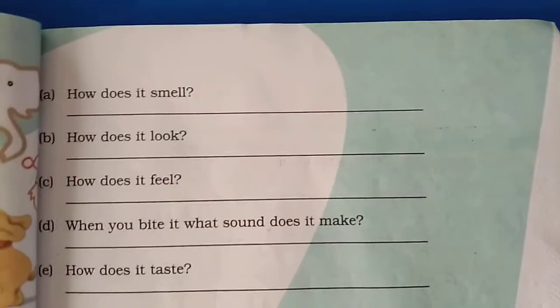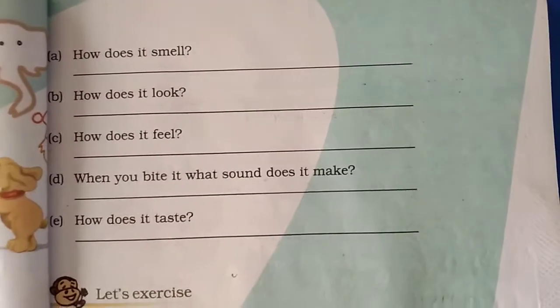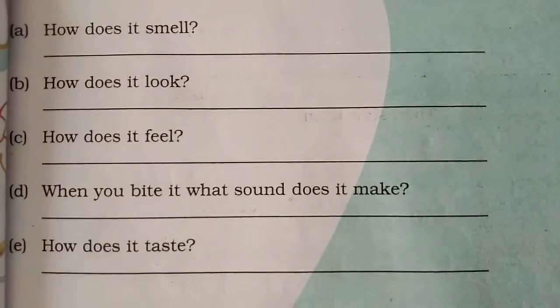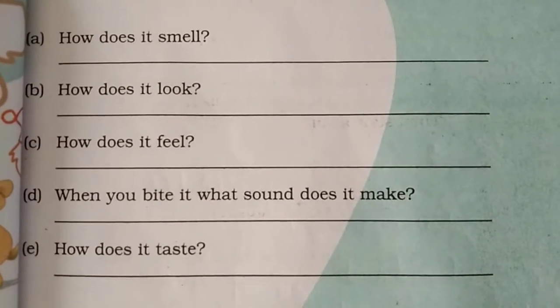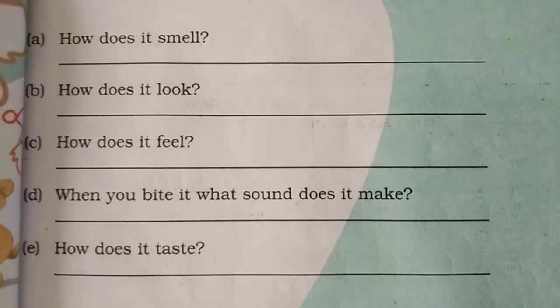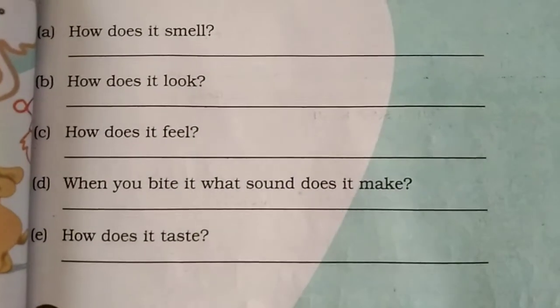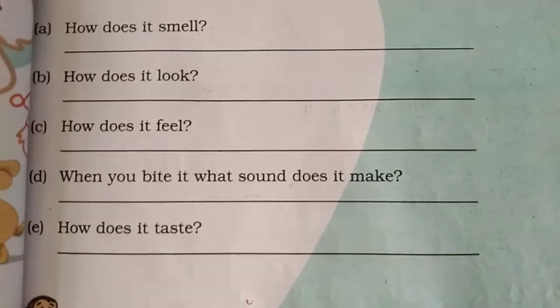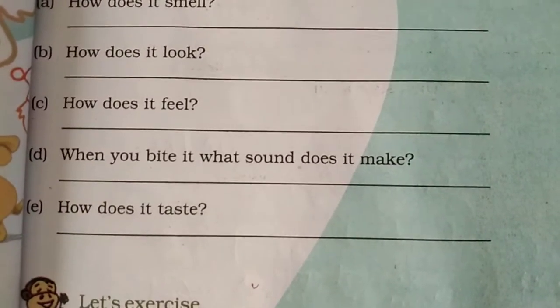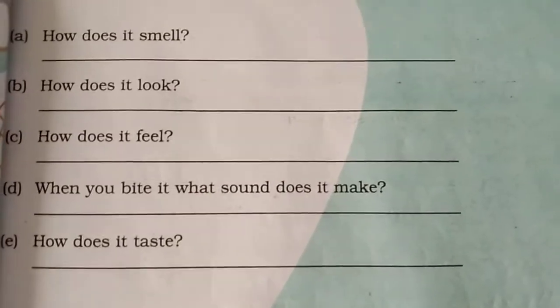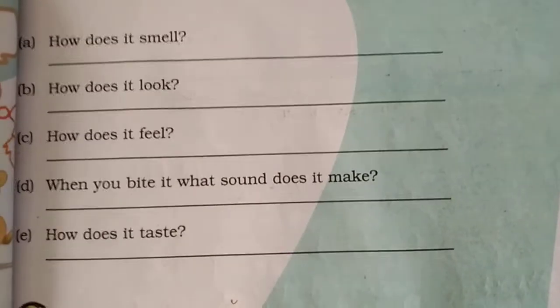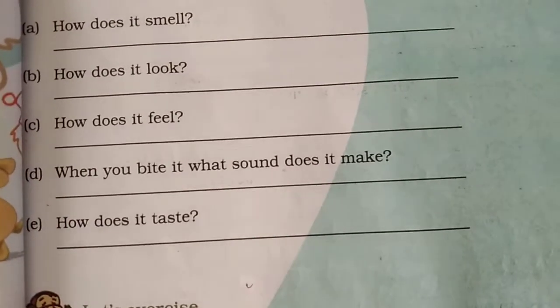On page 21, they have asked us some questions. First question: how does it smell? If your favorite fruit is apple, how does it smell — what smell does it have? You can write that down. Second: how does it look? If I talk about apple, I would say apple looks like a cricket ball — because a cricket ball is also red and an apple is also red. So I can write: my apple looks like a cricket ball.